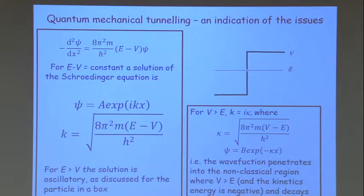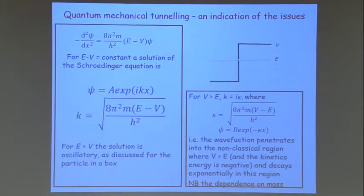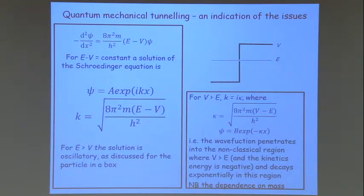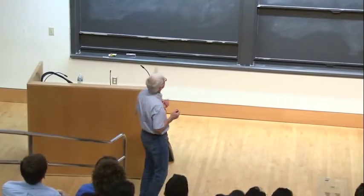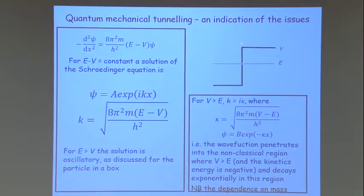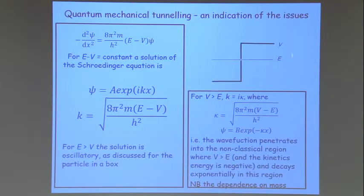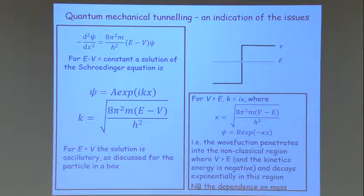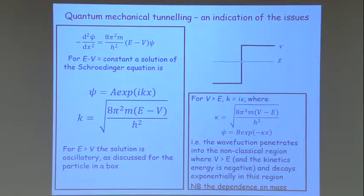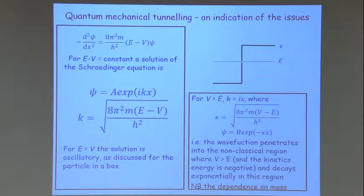One of the really interesting things that comes out of quantum mechanics quite naturally is quantum mechanical tunneling. Here's a potential energy step: the potential energy is constant on both sides, but greater than the total energy E on one side and less than E on the other. Here is the Schrödinger equation slightly rearranged. E minus V is a constant.